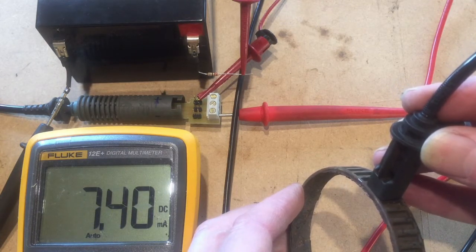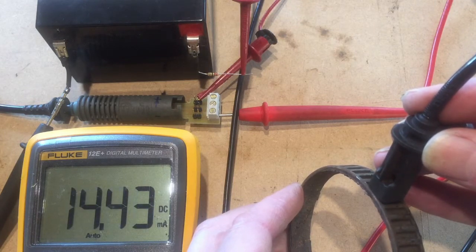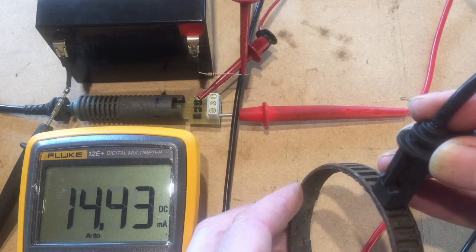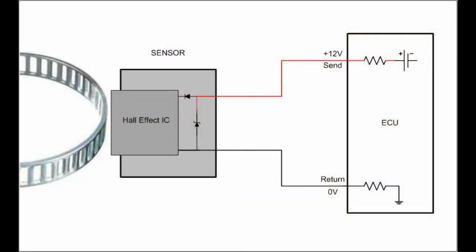There are 48 gaps on the reluctor wheel, so each rotation of the shaft produces 48 pulses. This is the system view of the sensor connection to the ECU. In the next video, I will deal with the full repair.